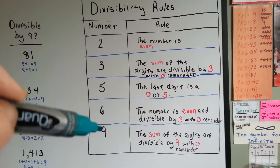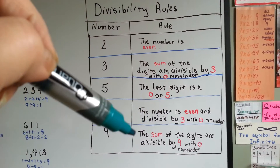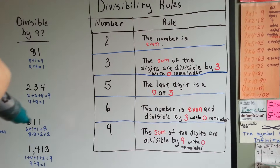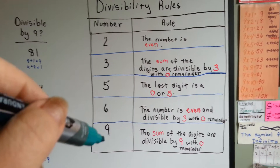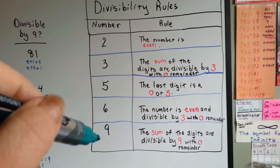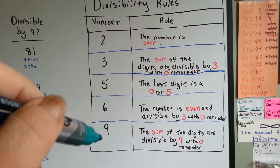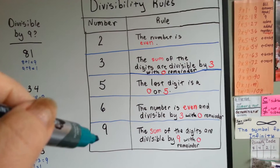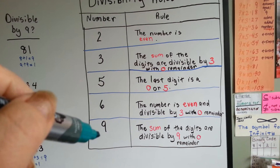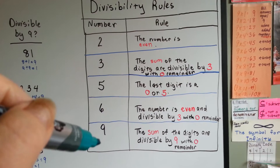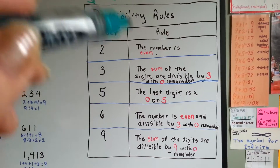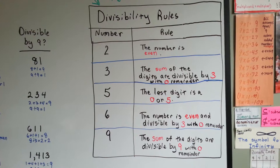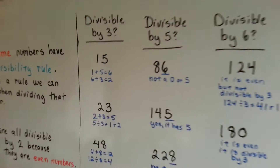You can divide a number by 9 if the sum of the digits are divisible by 9 with 0 remainder. So that means we're going to add them all up again. Like 1,110: that would be 1 plus 1 plus 1 plus 0, that's 3. Can you divide 3 by 9 with a 0 remainder? Nope. So 1,110 is not divisible by 9. You can pause this if you need time to finish writing this chart.